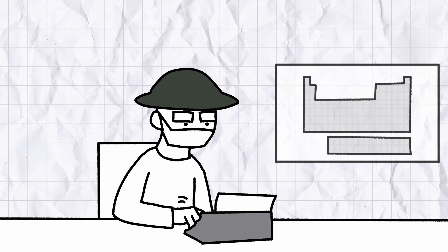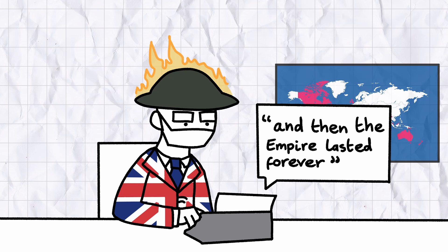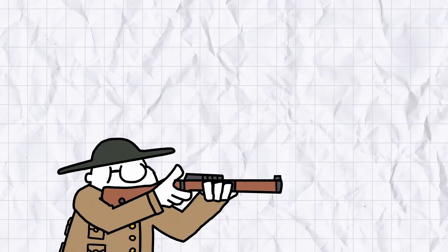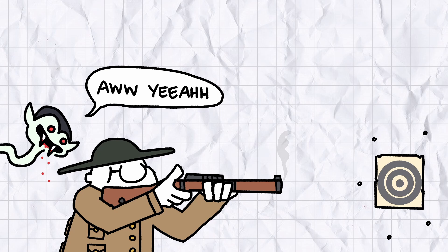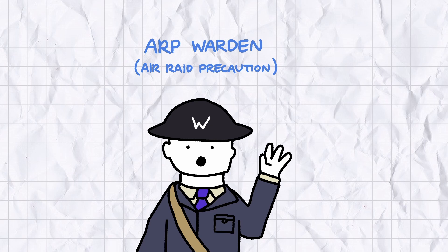Before the armchair historians among you start accusing me of blinkered Britbong bias, I should point out there's a few reasons the Brodie helmet wasn't seen much after World War I. The wide brim made it very awkward to shoot with, and it didn't offer much protection to the neck or the sides of the head. When World War II rolled around, old Brodie helmets were used by ARP wardens and the police to save money, but even then it was clear the salad bowl design was an evolutionary dead end.